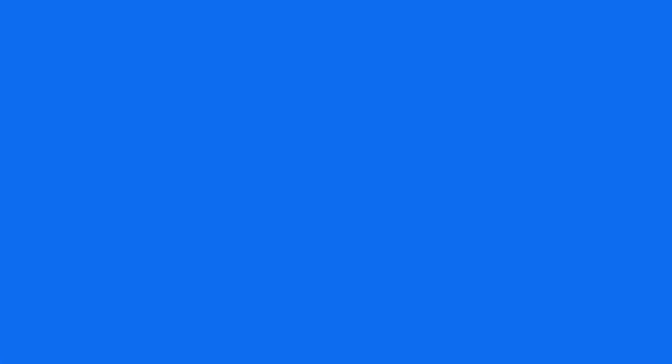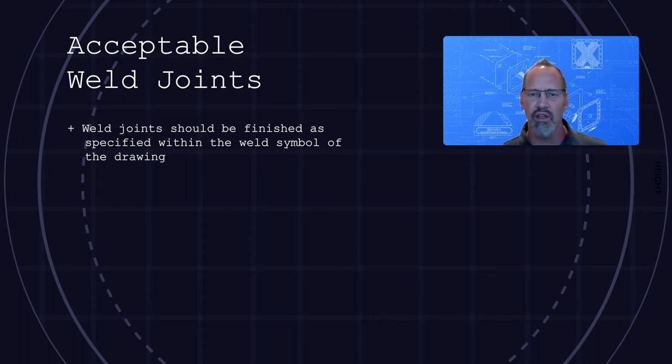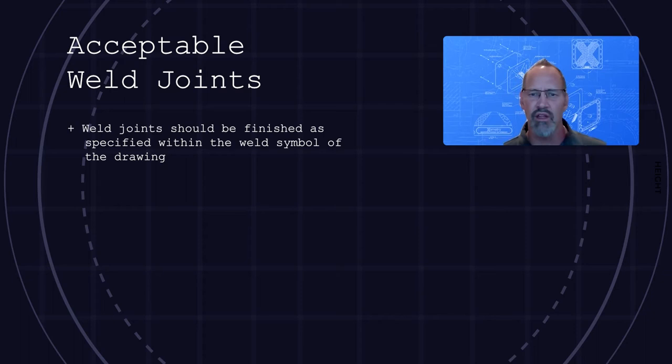Now let's review some examples that are acceptable. Xometry's standard for weld joints must include weld joints should be finished as specified within the weld symbol of the drawing.